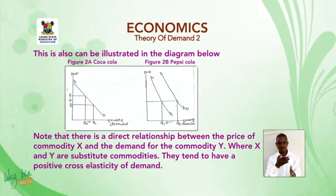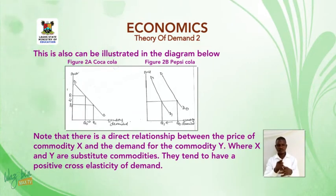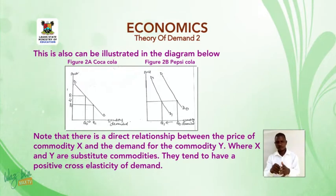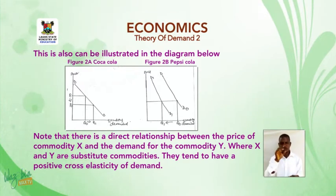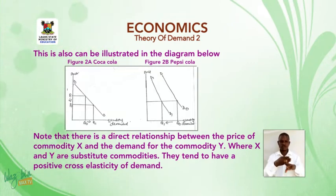Note that there is a direct relationship between the price of commodity X and the demand for commodity Y, where X and Y are substitute commodities. They tend to have a positive cross-elasticity.